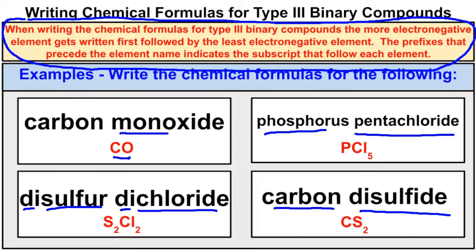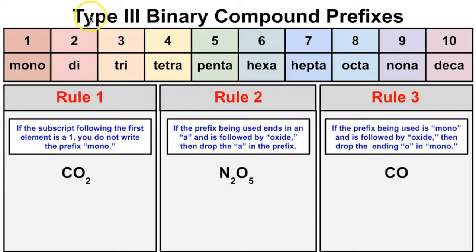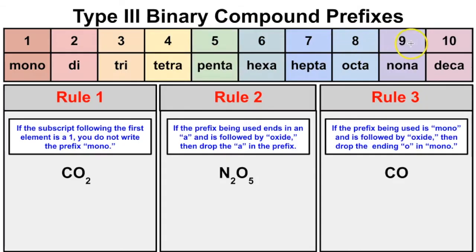Let's look at the prefix list before doing some problems. Pause the video and memorize these: 1 = mono, 2 = di, 3 = tri, 4 = tetra, 5 = penta, 6 = hexa, 7 = hepta, 8 = octa, 9 = nona, 10 = deca.